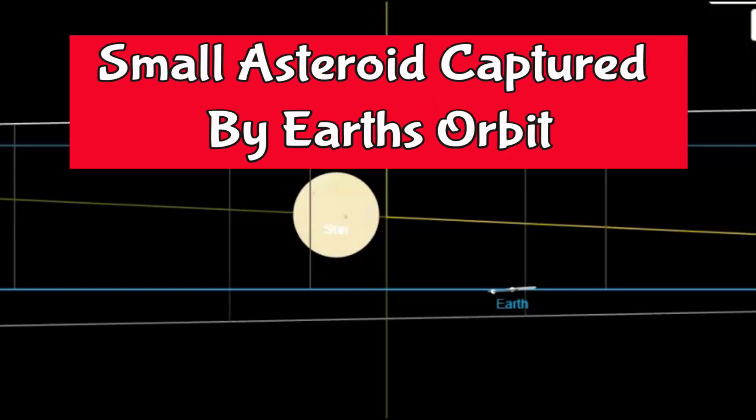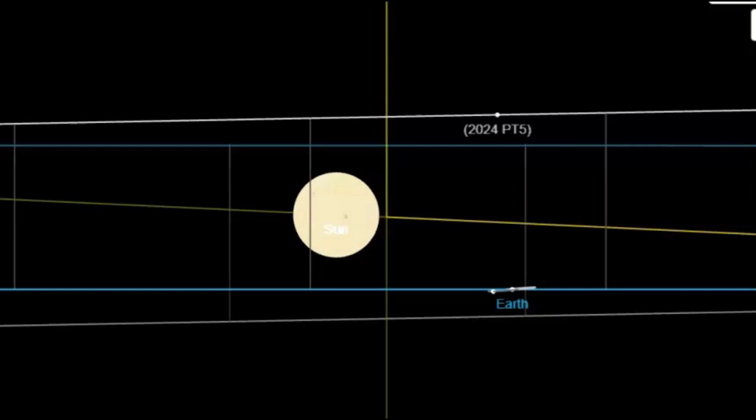I thought this was real interesting. Our Earth's gravity has captured an asteroid and it's going to be with us maybe for almost two months. All the news sites are calling it a mini moon, but it's not.